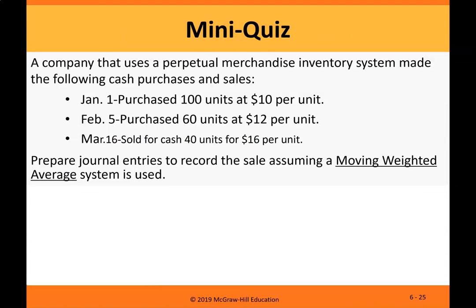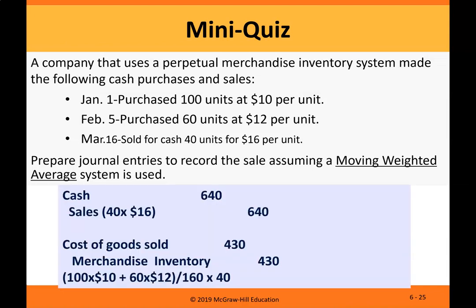Mini-quiz. A company that uses a perpetual merchandise inventory system made the following cash purchases and sales: January 1st — purchased 100 units at $10 per unit; February 5th — purchased 60 units at $12 per unit; March 16th — sold for cash 40 units for $16 per unit. Prepare journal entries to record the sale assuming a moving weighted average system is used. Debit cash $640, credit sales $640. Debit cost of goods sold $430, credit merchandise inventory $430.